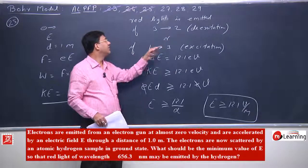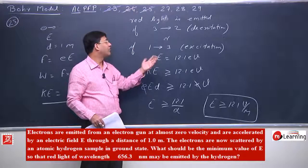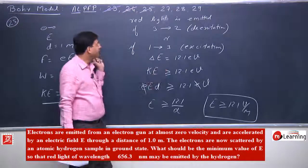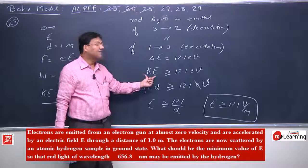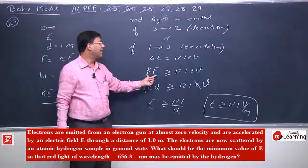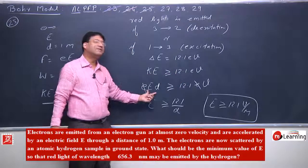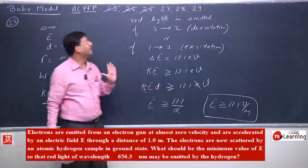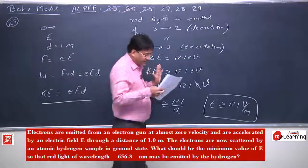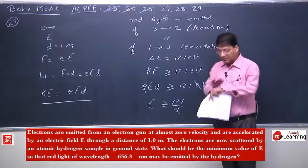The 3→2 de-excitation will occur when the atom is first excited from 1 to 3. For 1→3 excitation, the energy must be sufficient. This is a simple problem. Now we will discuss problem 27.